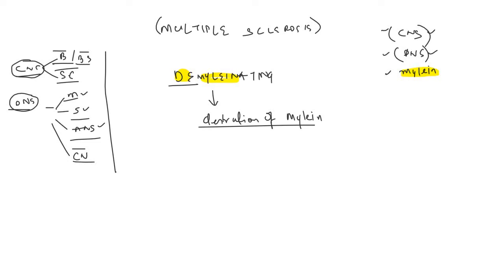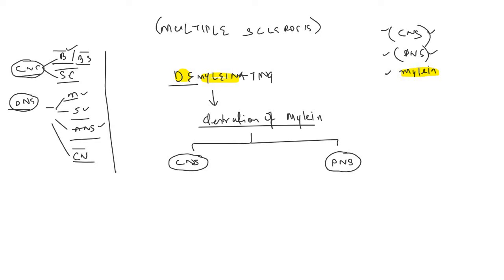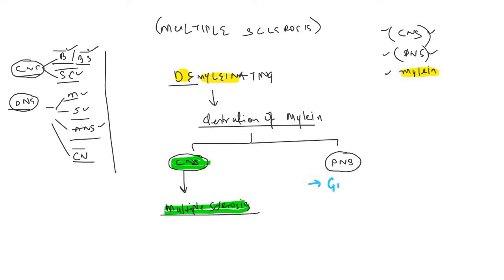Since myelin is found in both the CNS and the PNS, demyelinating disorders may involve the CNS or the PNS. If we talk about demyelinating disorders which involve the CNS — that is the brain, brain stem, and spinal cord — we have one primary example which is multiple sclerosis. And for PNS demyelinating disorders, we have GBS — Guillain-Barré syndrome.